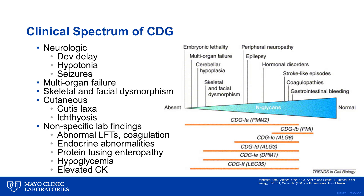Some cardinal features include hypotonia, developmental delay, seizures, cerebellar atrophy, cutis laxa, and strabismus. Because CDG are so heterogeneous and symptoms can be nonspecific, the general recommendation is to consider CDG in any unexplained disorder, particularly one with a neurologic component.